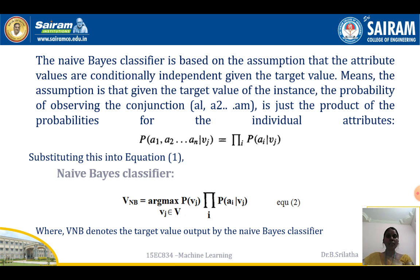The Naive Bayes classifier is based on the assumption that the attribute values are conditionally independent given the target value. This means that the probability of observing the conjunction of a1, a2, ..., am is just the product of the probabilities of the individual attributes: P(a1, a2, ..., an | v_j) = product of P(ai | v_j). Substituting this into the previous expression, v_NB equals argmax over v_j in V of P(v_j) times the product of P(ai | v_j). This is equation number two, where v_NB is the target value output from the Naive Bayes classifier.